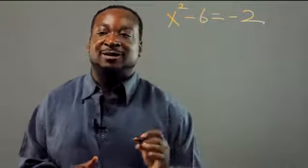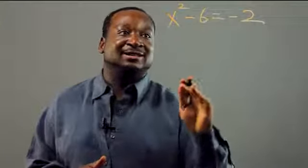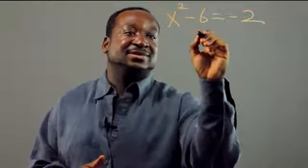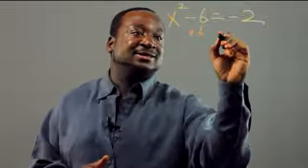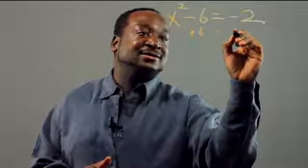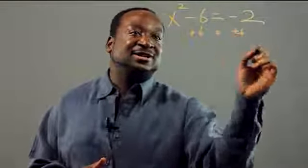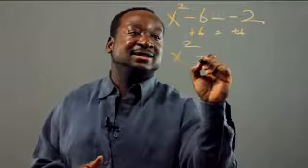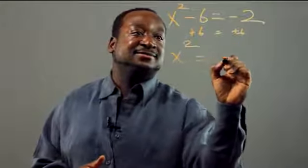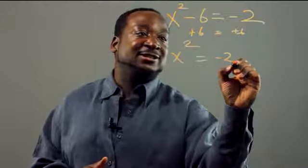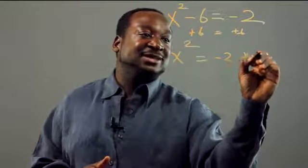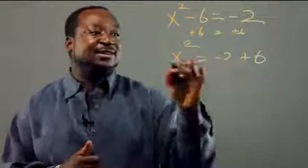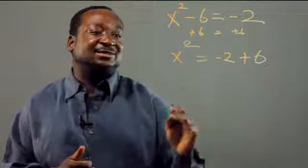What I'm going to do here is add both sides by 6. So I'm going to get plus 6 equals plus 6, and do the operation. So I'm going to get x squared equals negative 2 plus 6. Great, that keeps the value there.